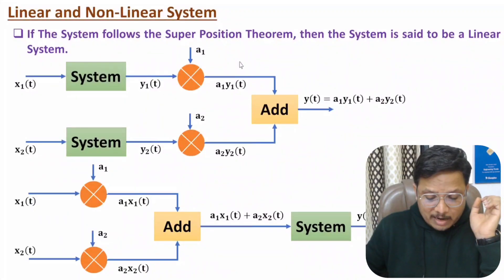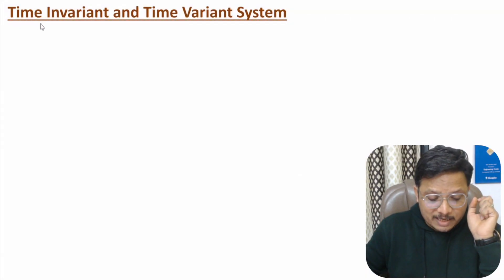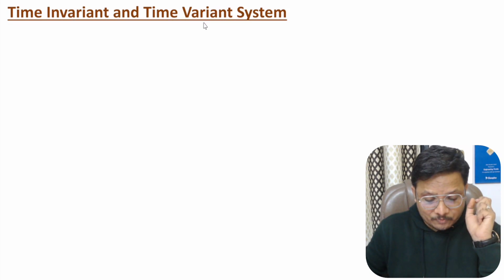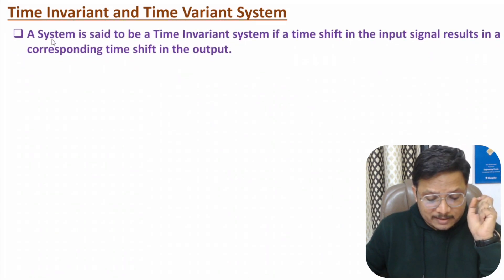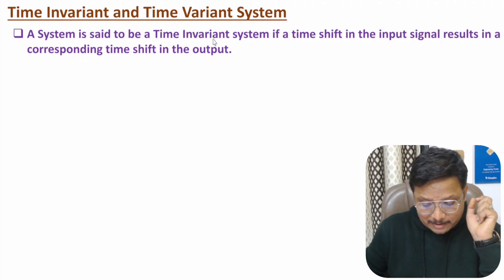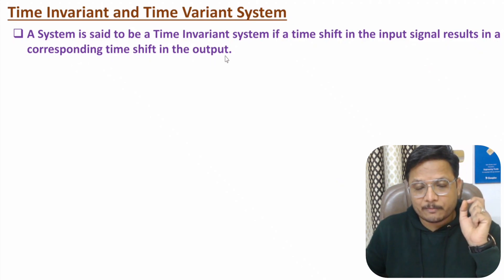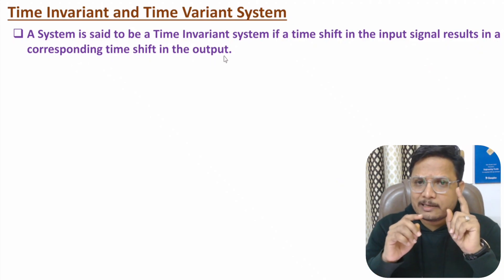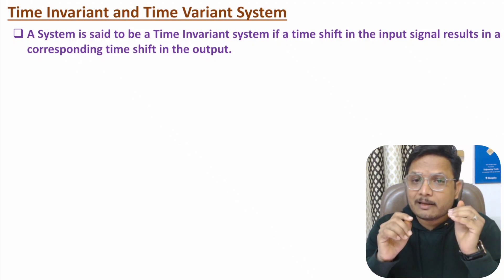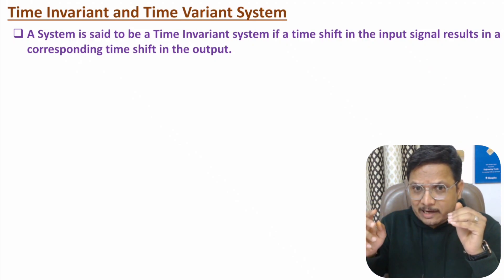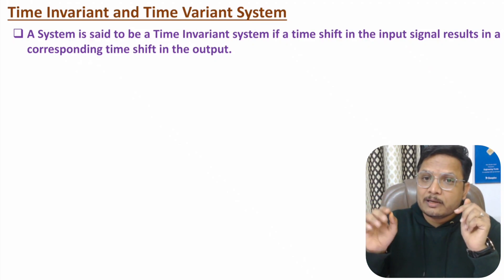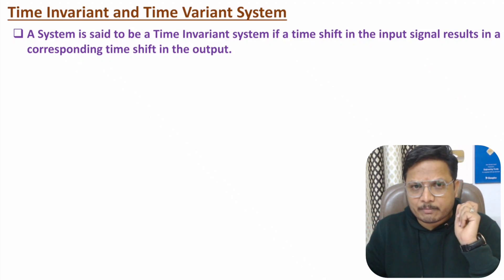Now I will discuss the second classification, based on time invariant and time variant systems. A system is said to be time invariant if a time shift in the input signal results in a corresponding time shift in the output. So if you provide a time shift at the input side, there must also be a time shift at the output side.